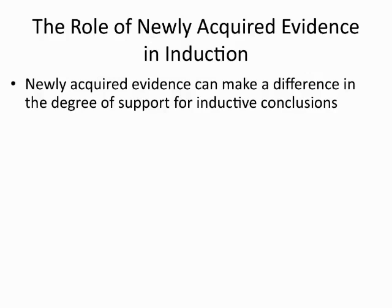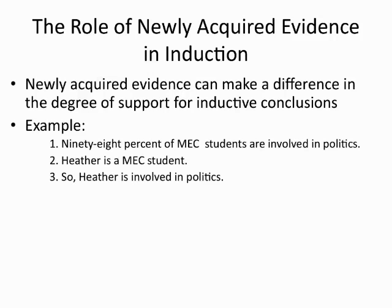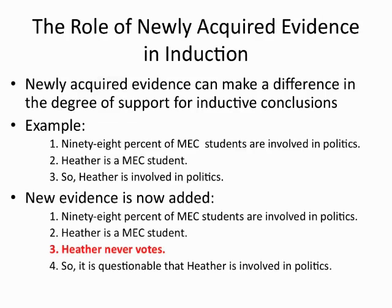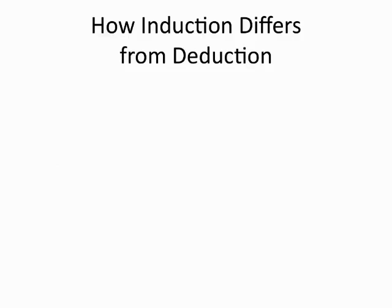What happens when we acquire additional evidence when reasoning inductively? Suppose we know that 98% of MEC students are involved in politics and that Heather is a student at MEC. We would reasonably conclude that Heather is involved in politics. But now, suppose we acquire an additional piece of information that Heather never votes. Our conclusion would now have to change, because people who don't vote are seldom involved in political processes.